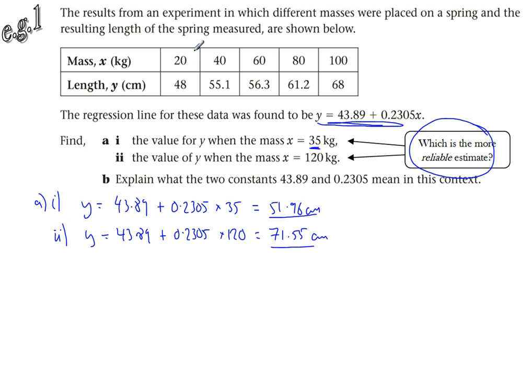Now which is the more reliable estimate? If we look at the data, the masses range from 20 up to 100 kilograms. A mass of 35 kilograms falls nicely within that range, so that would be interpolation. That's fairly reliable depending on the strength of your correlation. 120 kilograms though, that's up here and we never tested data up there. We don't know if the spring might break or its behaviour might change. So this is the most reliable estimate.